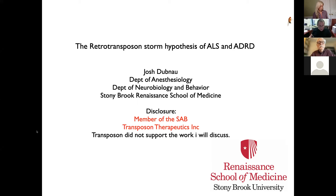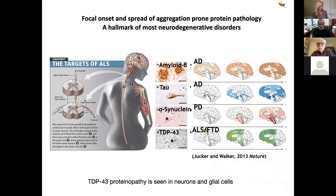As you're all aware, one of the most mysterious aspects of neurodegenerative disorders generally and of ALS in particular is the apparent onset that appears to be focal and localized, followed by a progressive spread. The idea has emerged in the literature that this involves aggregation pathology of various proteins, depending on which disorder is being considered, followed by propagation through the tissue.